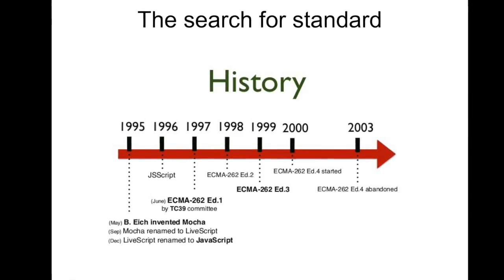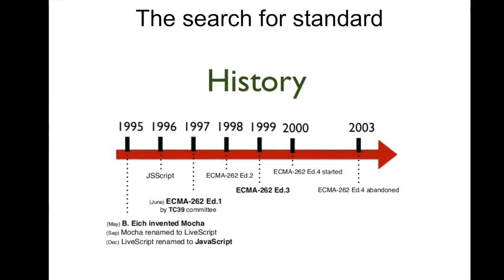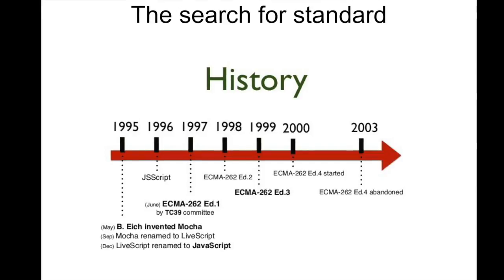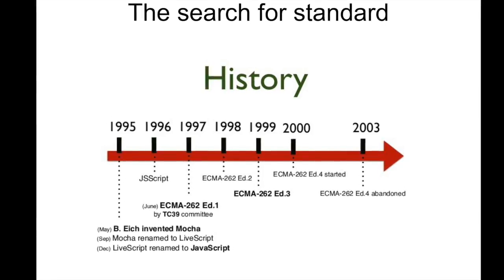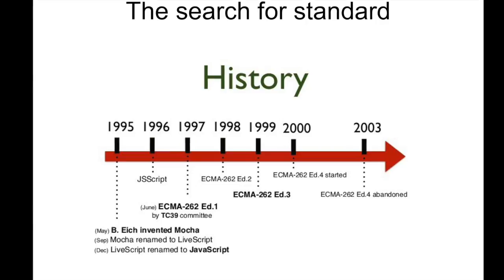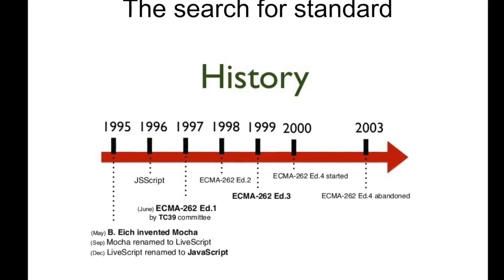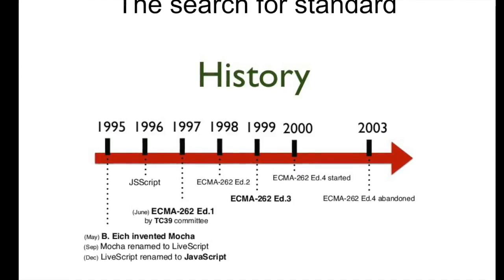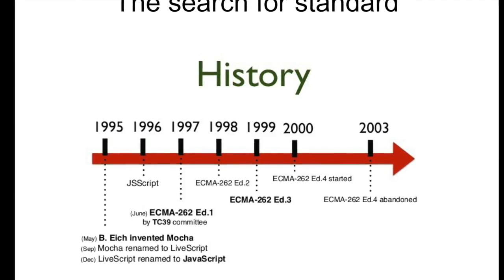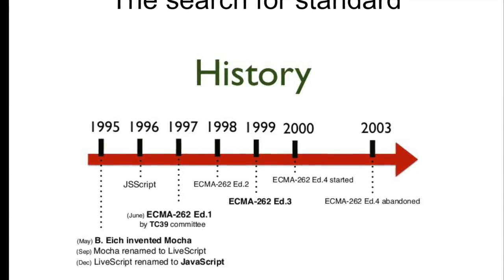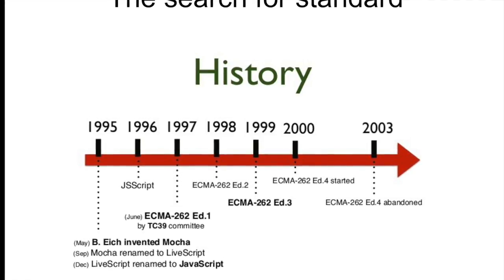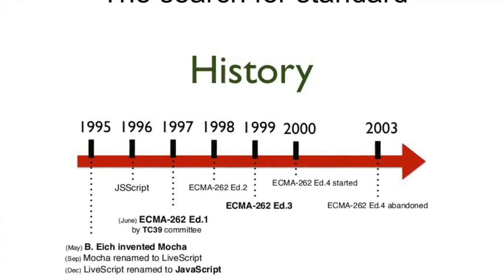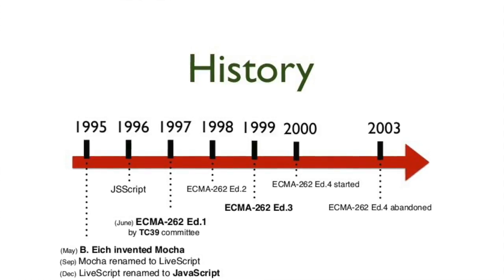Netscape and Sun Microsystems wanted to have their language standardized. They went to the W3C, and the W3C turned them down. They found their way eventually to the European Computer Manufacturers Association, which is where the term ECMAScript comes from. So JavaScript is actually a version of ECMAScript. The name JavaScript is a trademark that was held by Sun Microsystems and is now currently owned by Oracle.